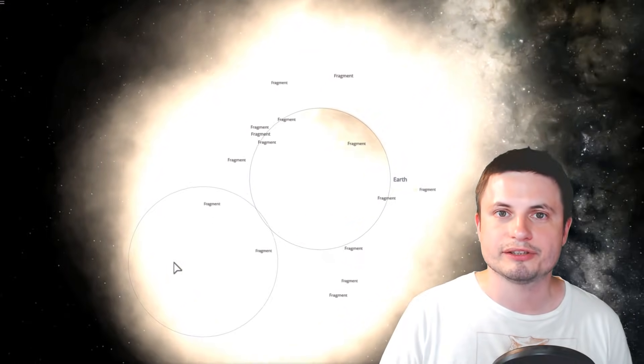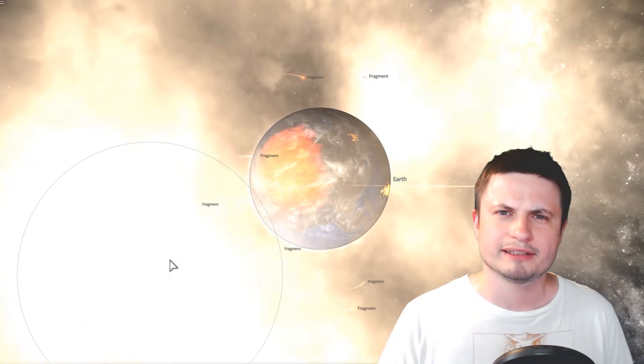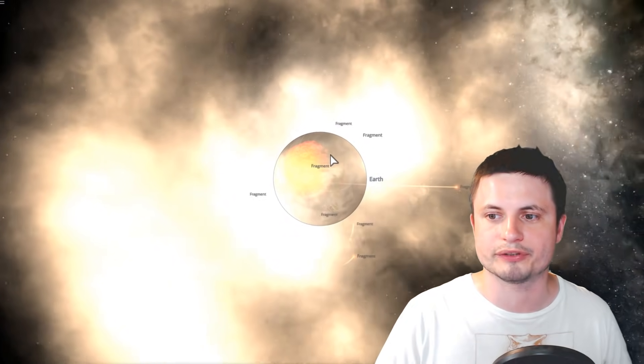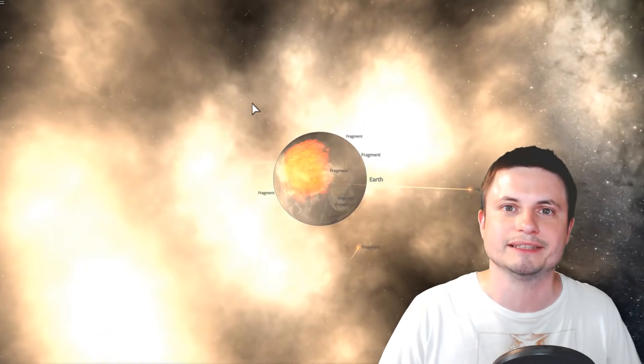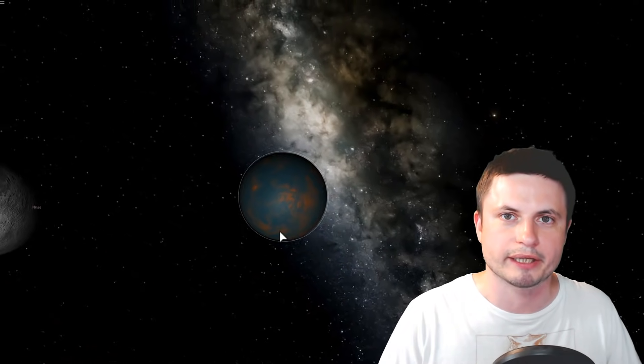But unfortunately this is a very simplified version of the story because no matter how we look at this, some things don't seem to add up. So for example, let's go back to the pre-collision earth, procedurally generated because we don't really know what it looked like back then.